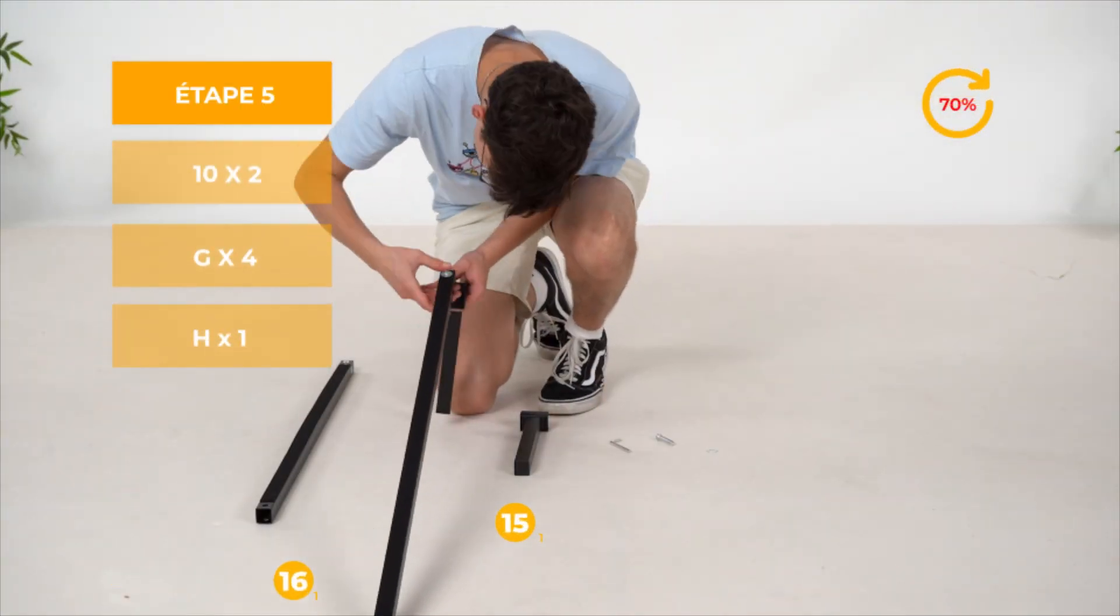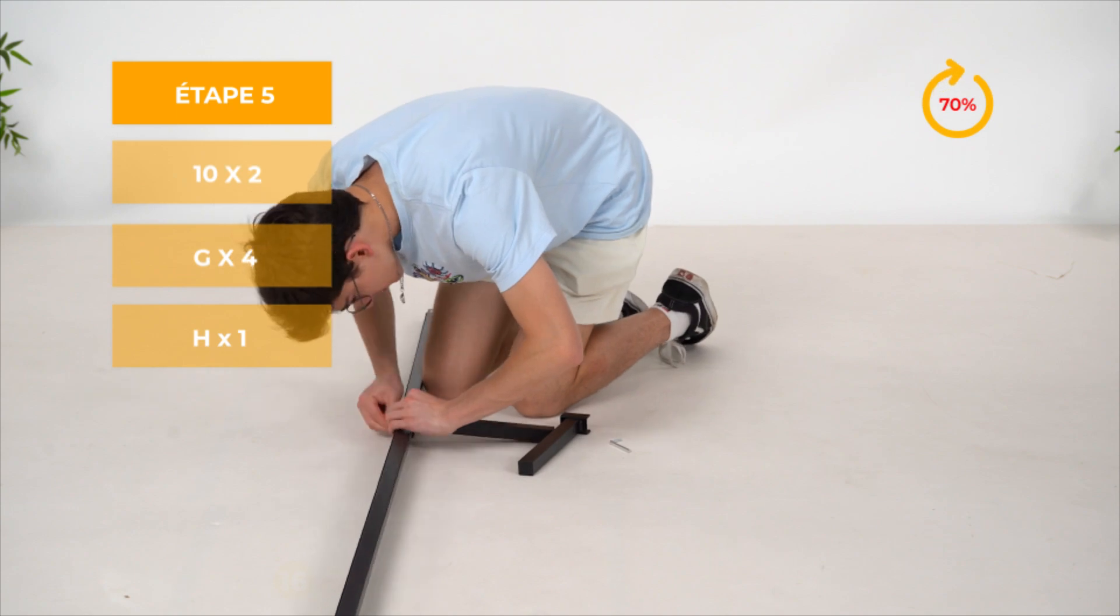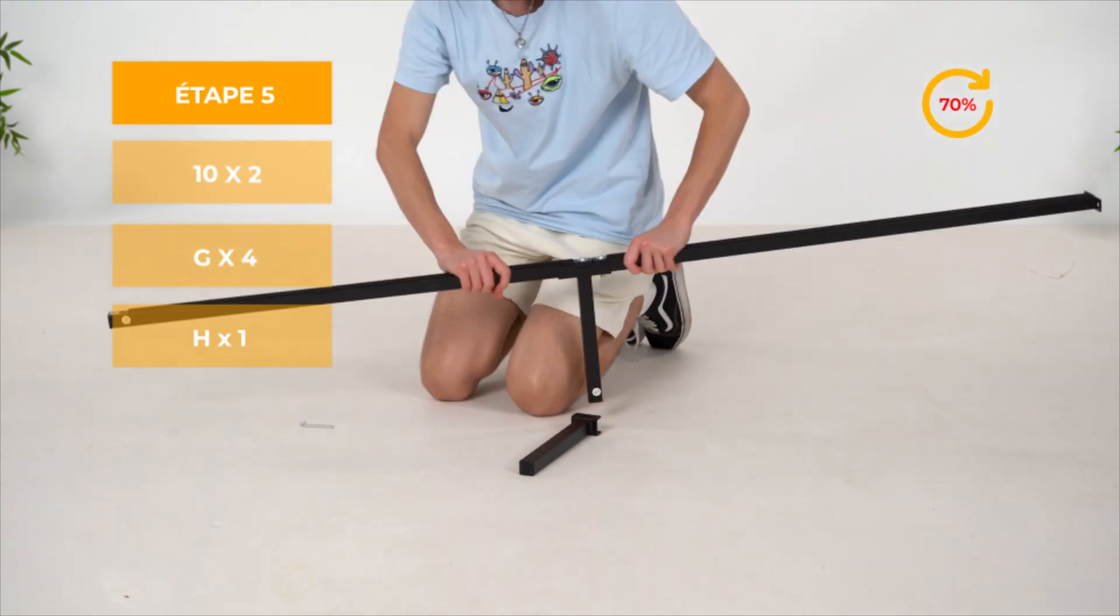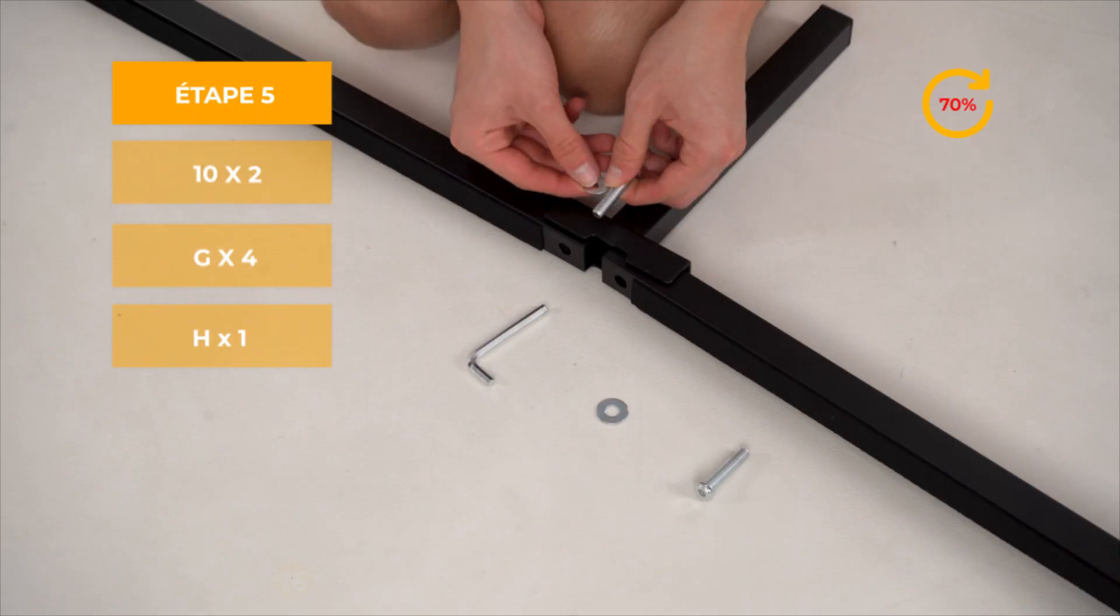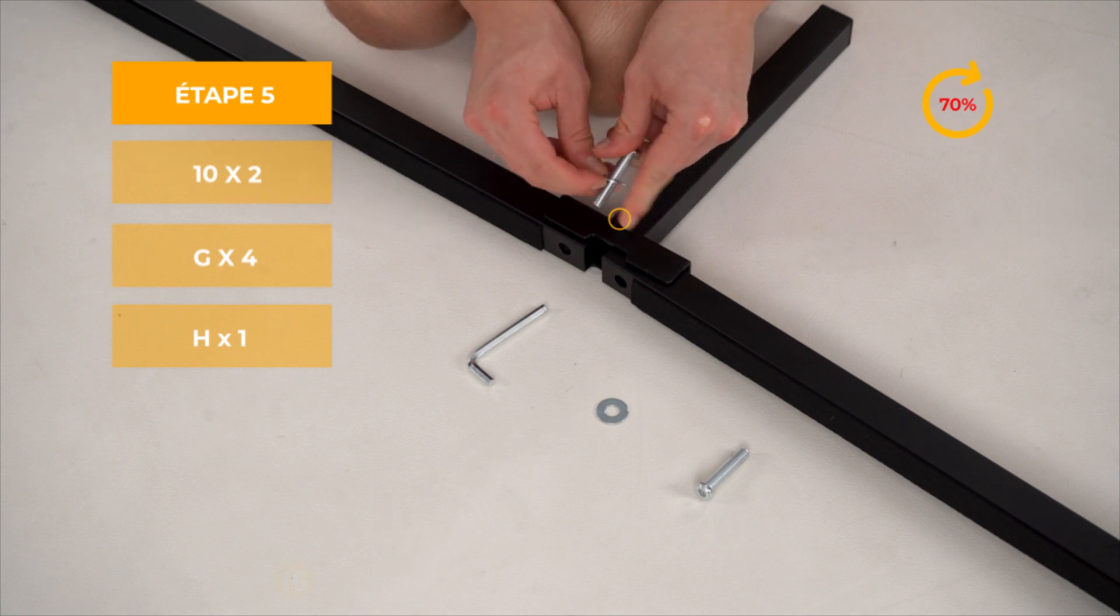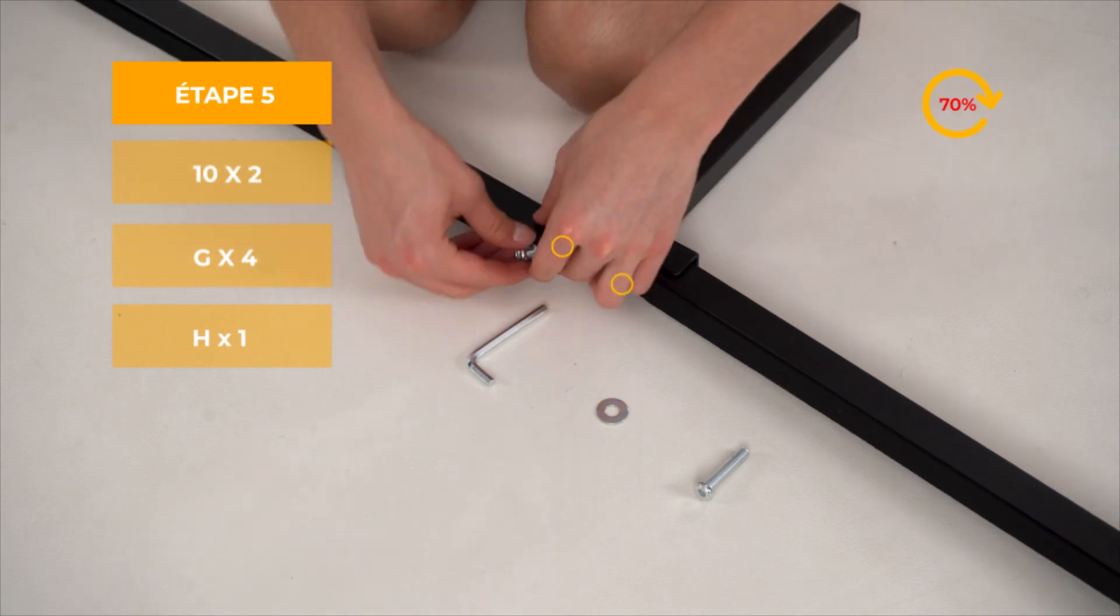Pour l'étape 5, placez la pièce 14 au centre afin d'assembler la pièce 16 et 17, puis vissez à 70%. Pour terminer, placez la pièce 15, mais ne vissez pas pour l'instant.